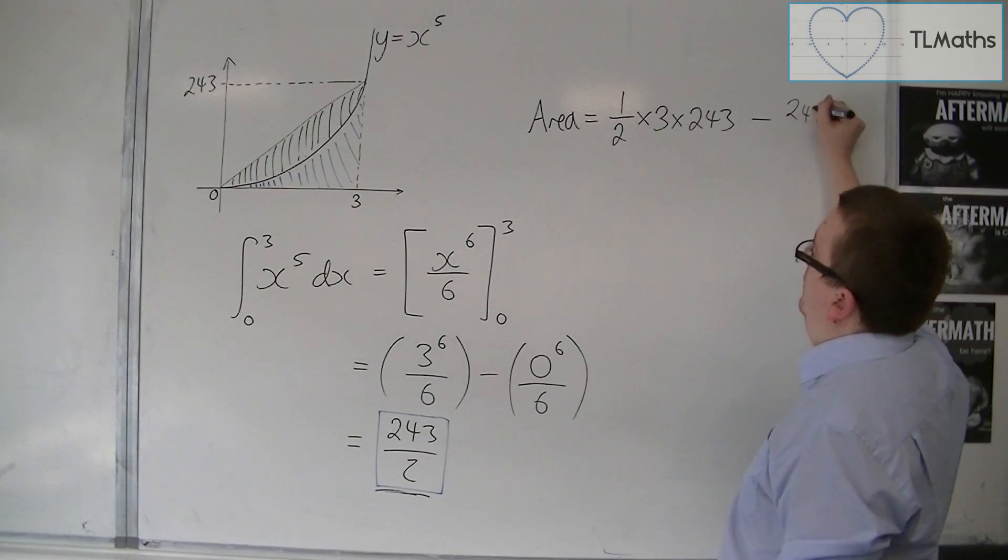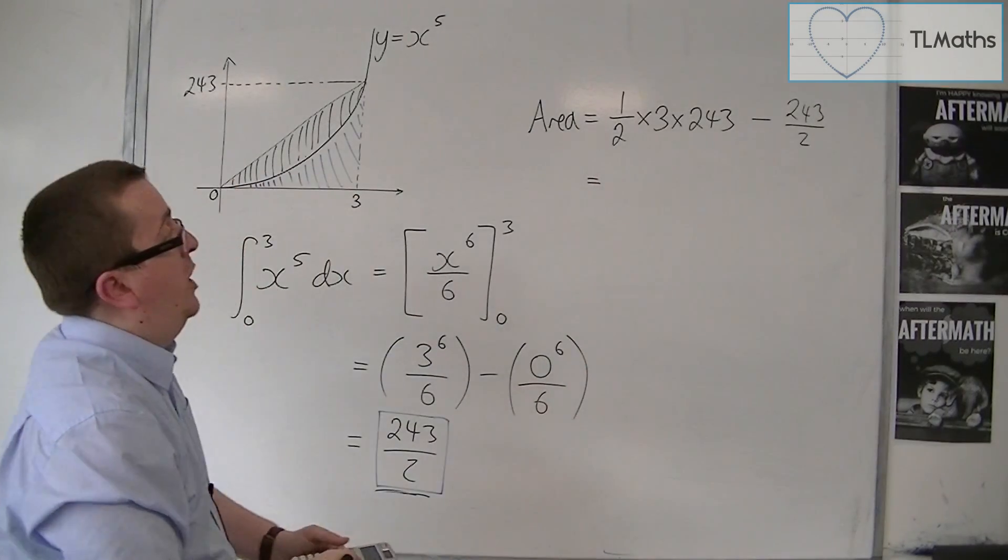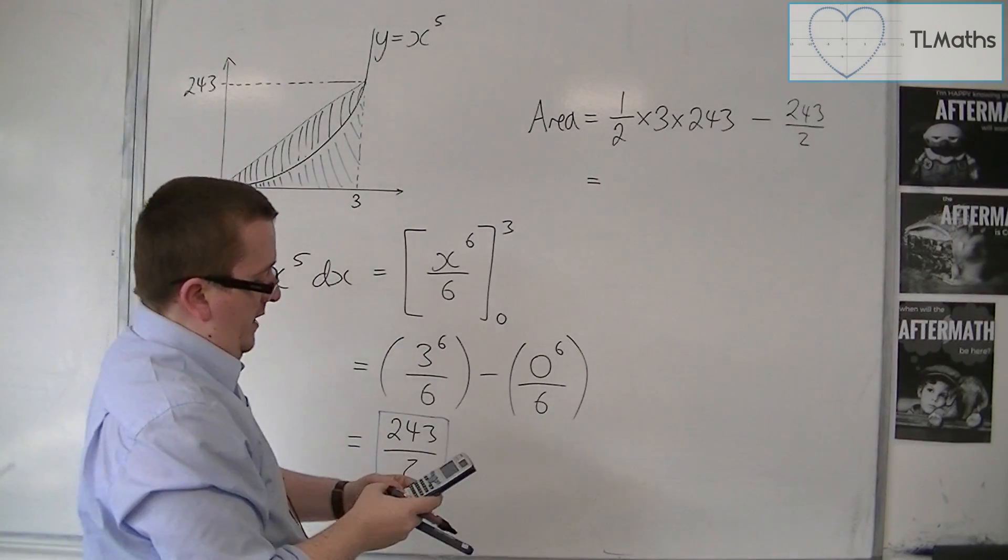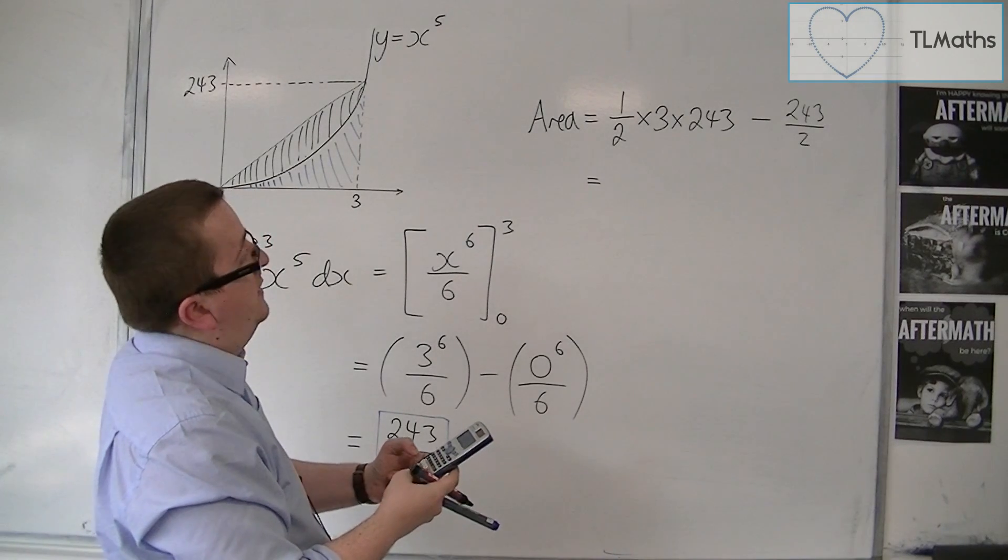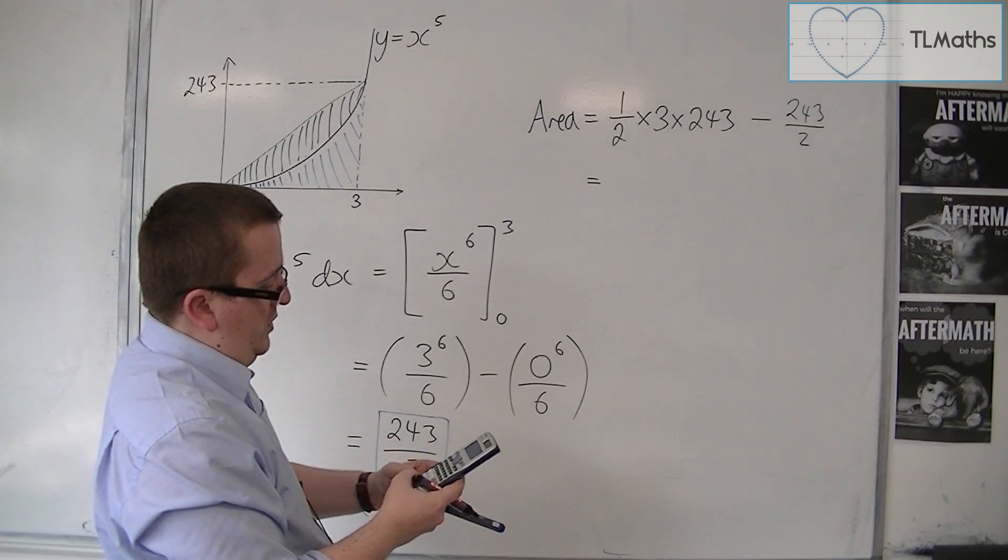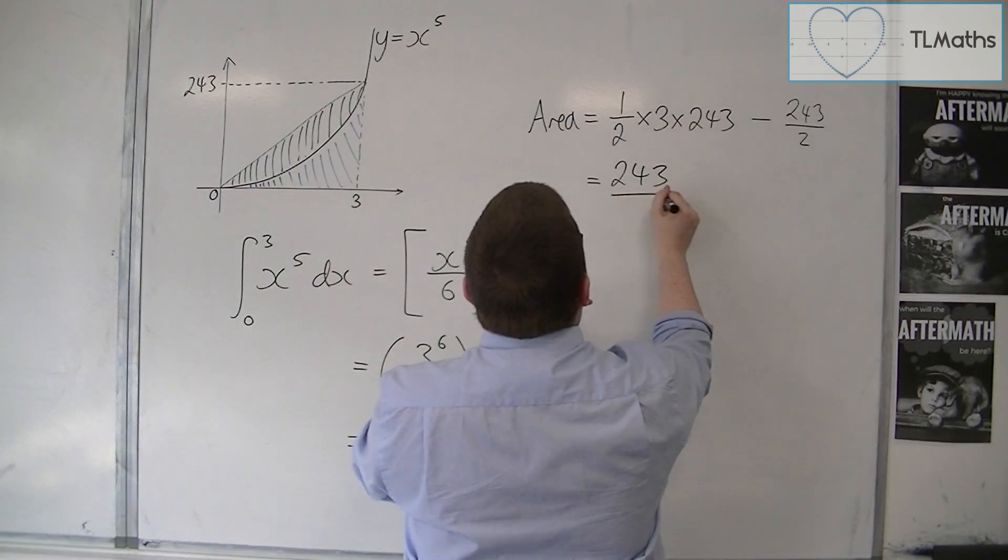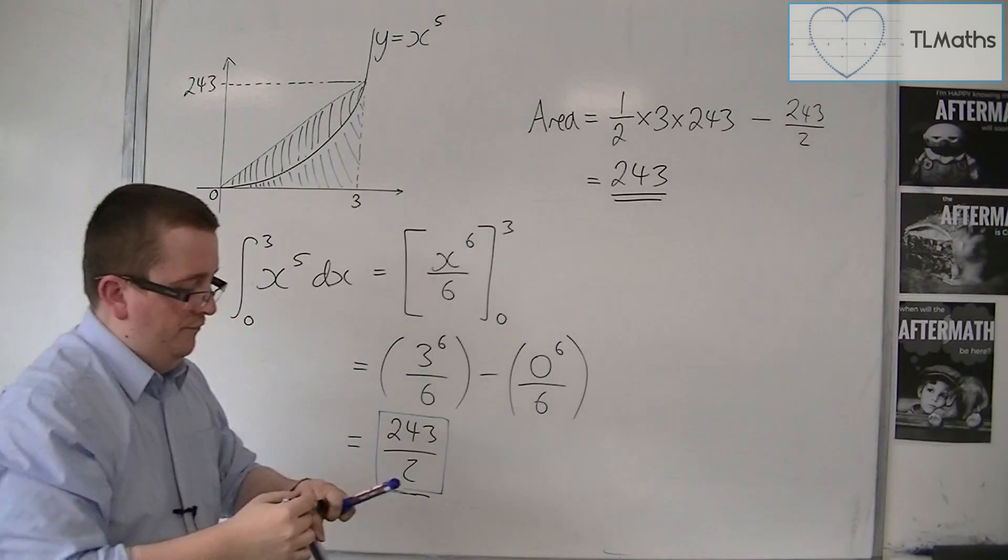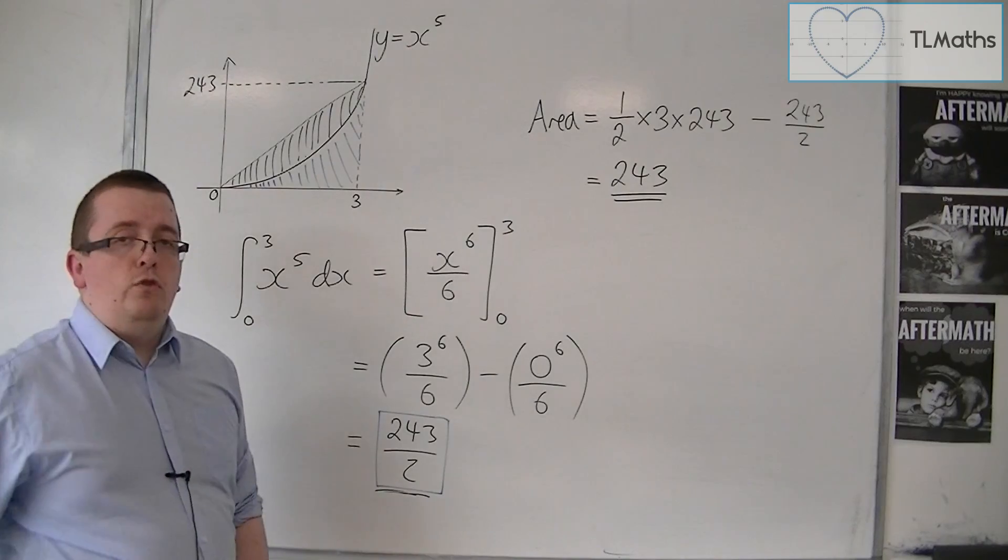And then take away the area of the shaded region, the blue shaded region. So 1 half times 3 times 243, take away 243 over 2, and that gets me 243. Okay? So that is the area of the shaded region.